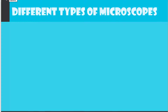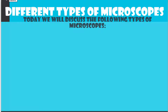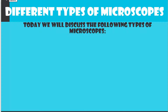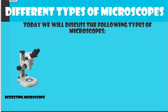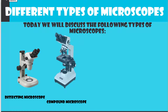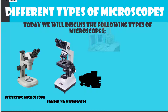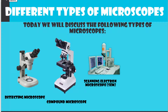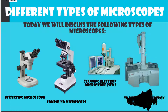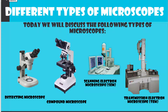Different types of microscopes. Today we will discuss the following types of microscopes: the dissecting microscope, the compound microscope, the scanning electron microscope or SEM, and the transmission electron microscope or TEM.